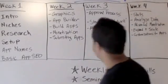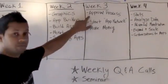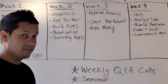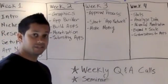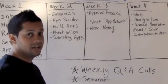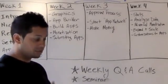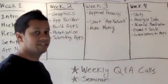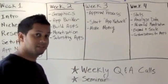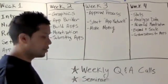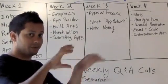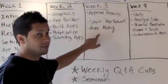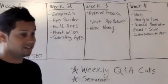When we get to week three, there's an approval process that happens with all of these stores — it has to go through the layers and get approved. The Android store is much easier than iTunes and Windows, which have a whole entire approval process. We're going to get into a little bit more detail about your app network. As I talked about in the sales video, it's very important to build your network of apps and connect them all to each other. And then you're going to start making money in week three and week four.